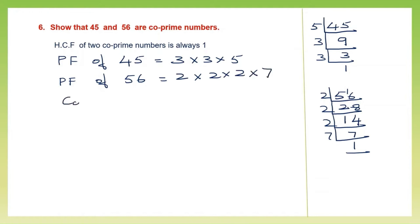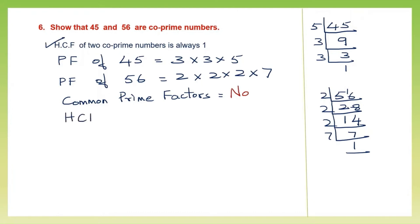Now what are the common prime factors? If you look and see, there is nothing that is common — there is no common prime factor. When there is no common prime factor, the HCF will always be 1. So we have proved that 45 and 56 are co-prime numbers.